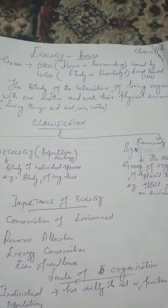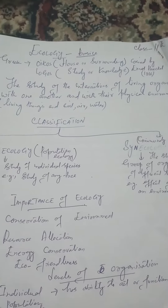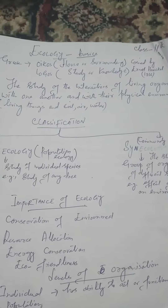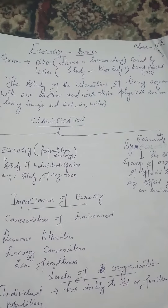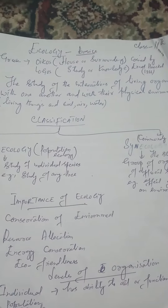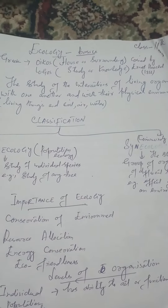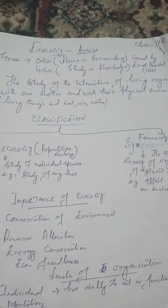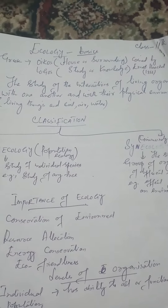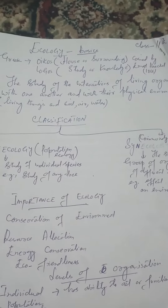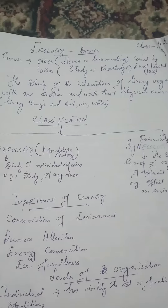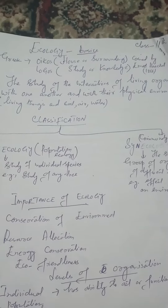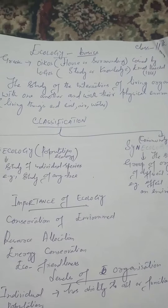The word Ecology is derived from two Greek words: Eikos and Logos. Eikos means house and surrounding, and Logos means study and knowledge. So it is the study of the knowledge of surroundings.